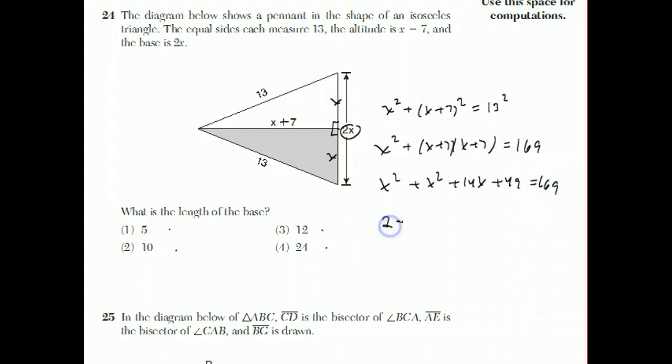x squared plus x squared plus 14x plus 49 equals 169. You subtract 169 from both sides, get minus 120. Now this 2 out here is pretty annoying, but you can divide everything through by 2.